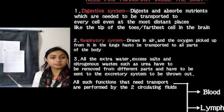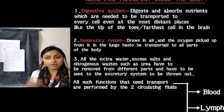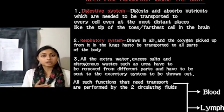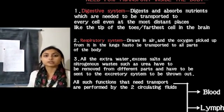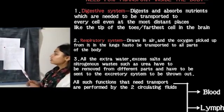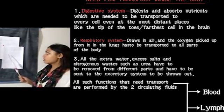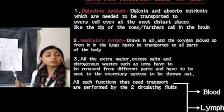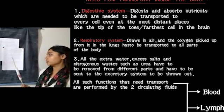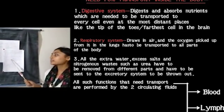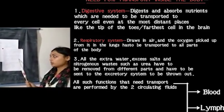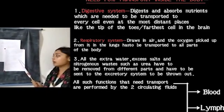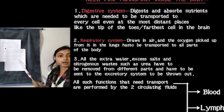Respiratory gases are very much involved with the exchange of air — oxygen and carbon dioxide — which is particularly handled by the circulatory fluid. It draws in air and the oxygen picked up in the lungs has to be transported to all parts of our body. Also, all the extra water, excess salts, and nitrogenous waste such as urea have to be removed from different parts.